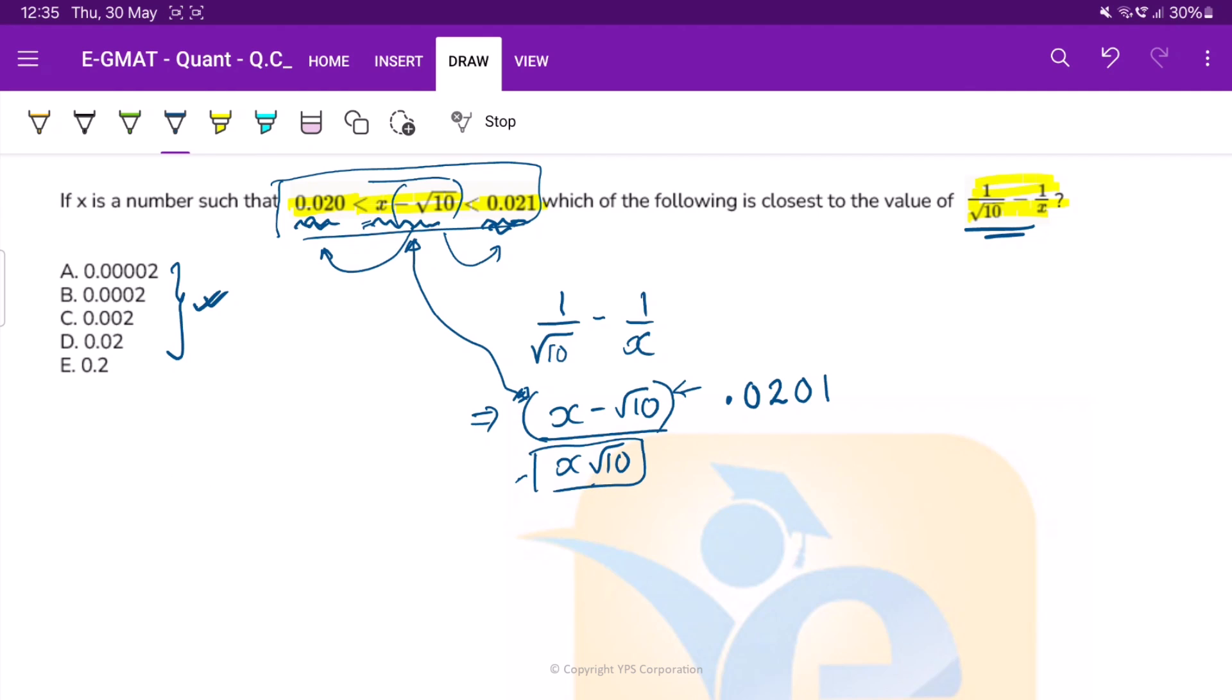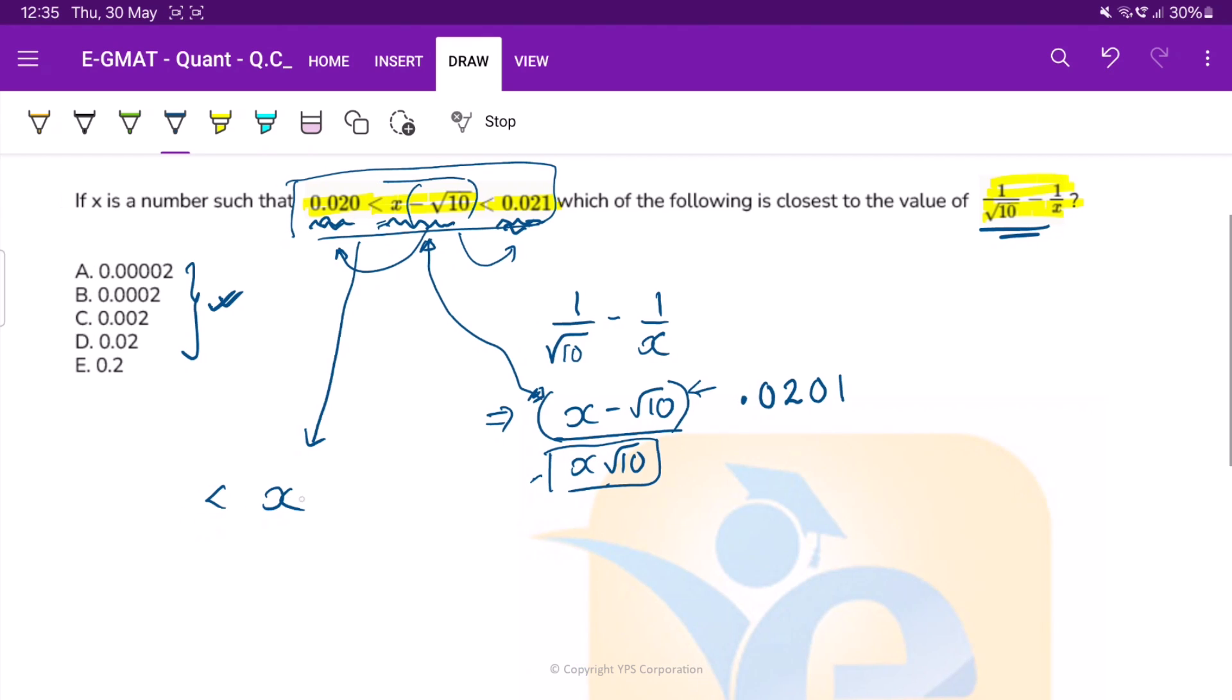Alright, so see what happens here is if you take this equation, we put x, and on both the side we add under root 10, under root 10 plus 0.02 plus 0.021. Now what is the value of under root 10? It would be somewhere greater than 3, 3 point something. So if on 3 point something you add 0.02, will that create much of a difference? I believe not. So x can be safely approximated to under root 10.